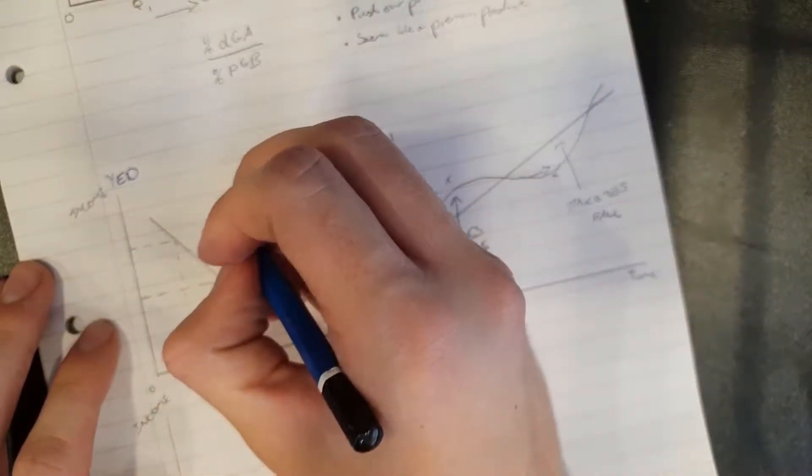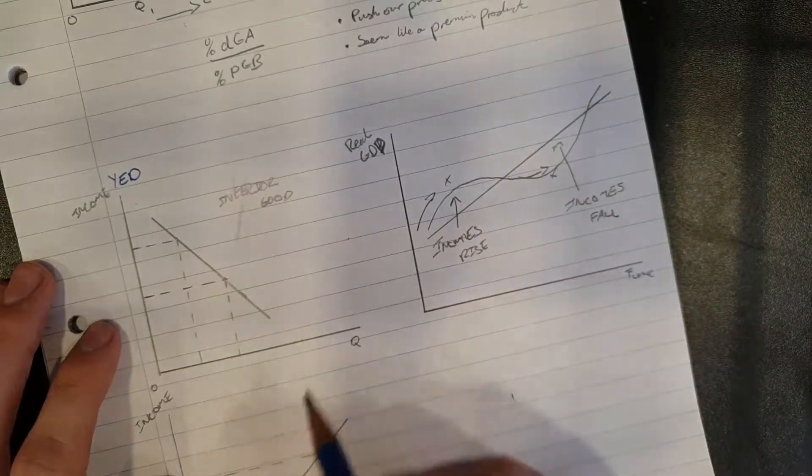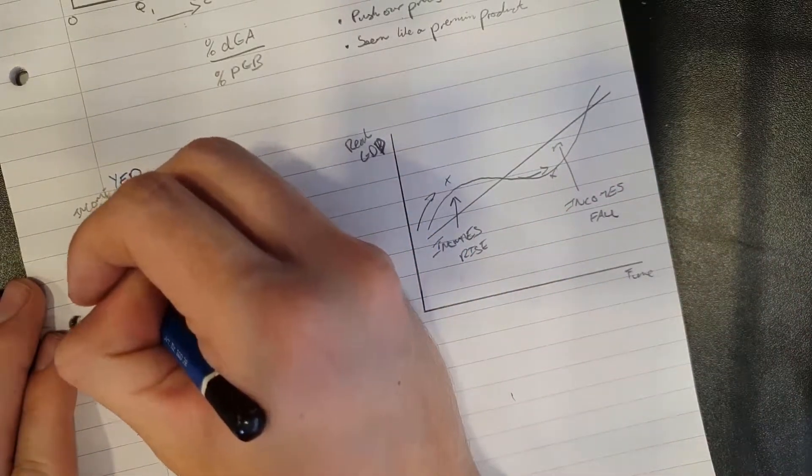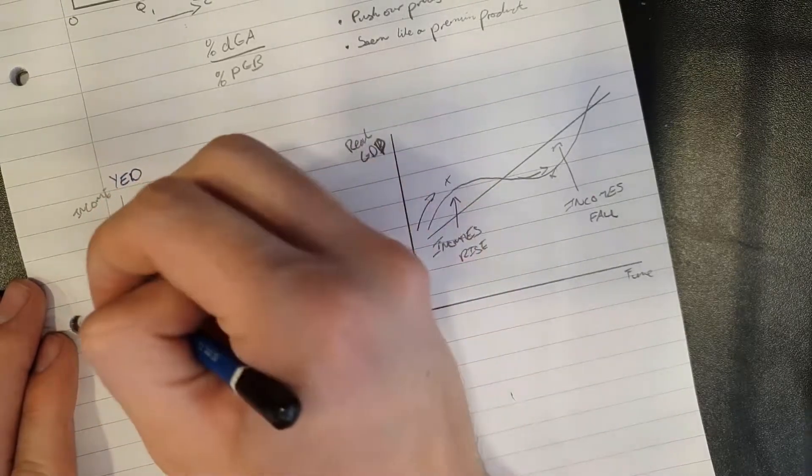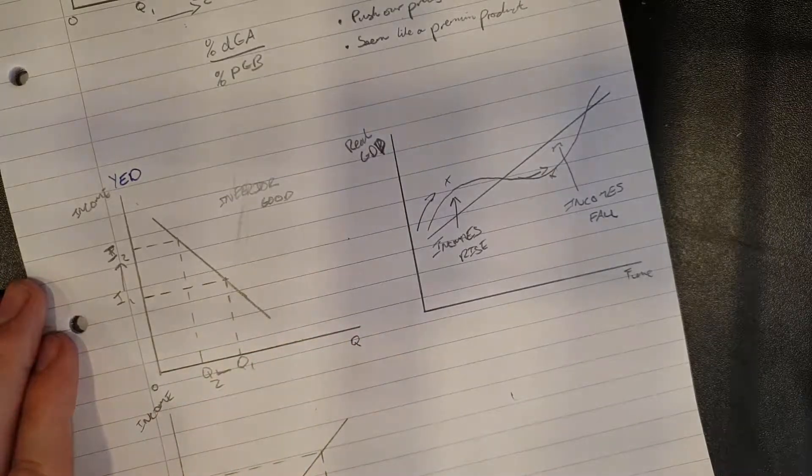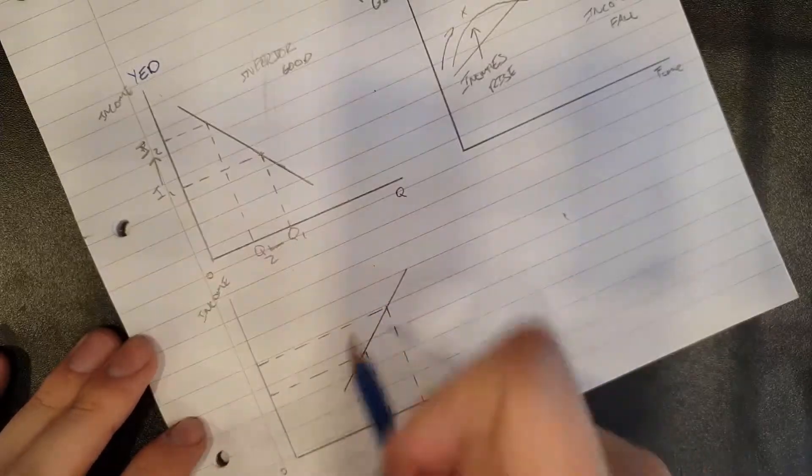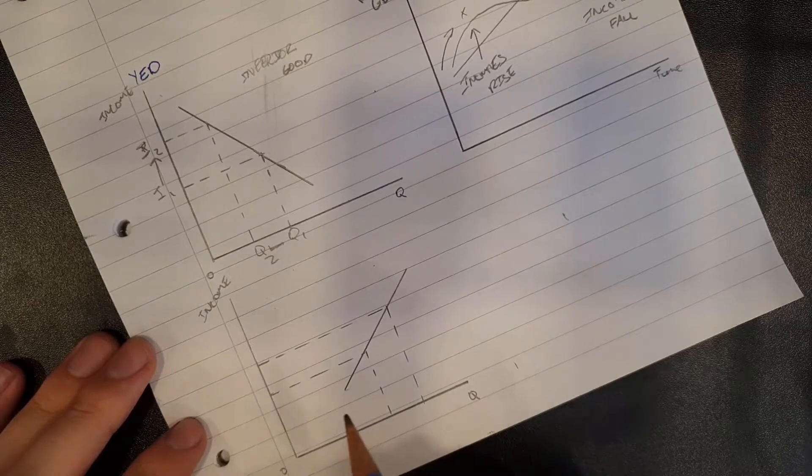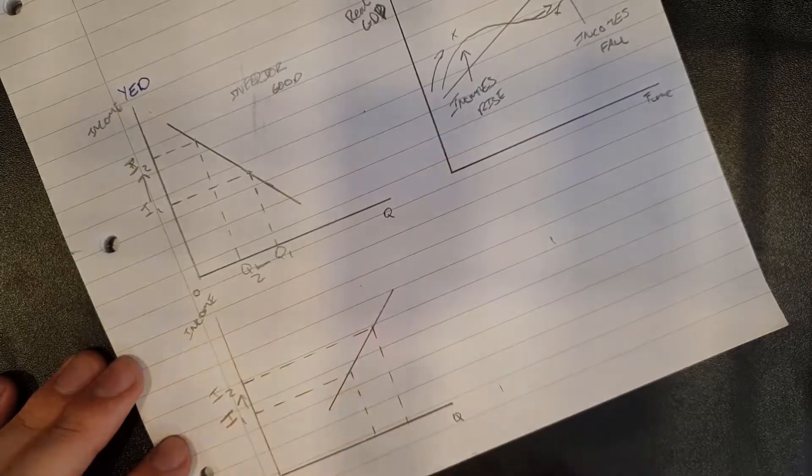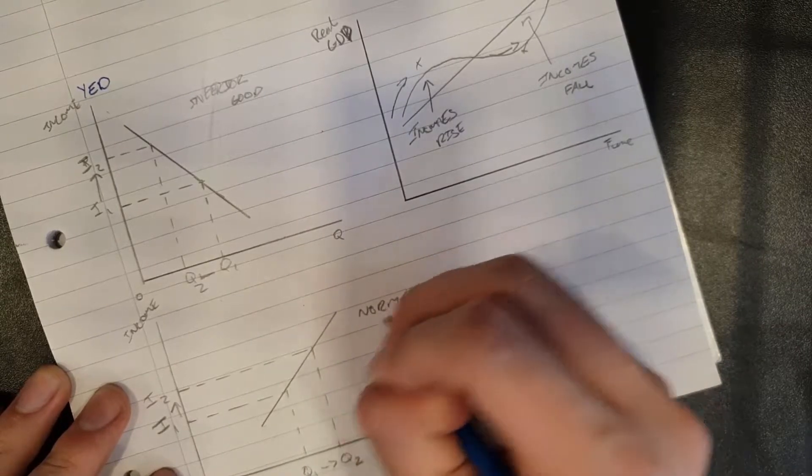So YED is completely concerned about how the rising and falling of incomes will affect demand. So over here, I've drawn a graph for an inferior good. And in a boom, inferior goods demand will fall. Because as people get more money, they will want to pay more for more premium brands. So what will happen is that incomes rise from I1 to I2. And hence, quantity falls from Q1 to Q2. Now, if we look down here, this is the opposite shape. And this is a normal or luxury good, where demand for it will rise during a boom. So, as income rises, so does the demand. This is a normal or a luxury good.